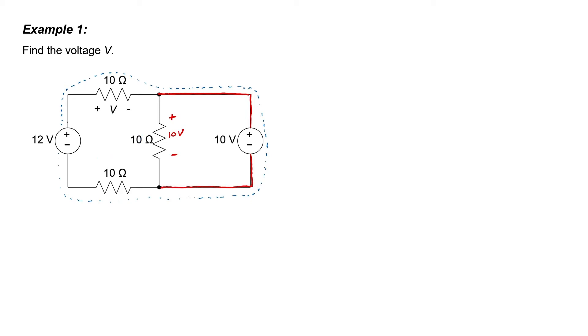Let's start from the bottom of the 12 volt source and work our way clockwise. So I have a 12 volt rise across the 12 volt source. Then I'm going from positive to negative so I have a fall of V. Now I'm going from positive to negative so I have another fall of 10 volts. And then I can define the voltage across this 10 ohm resistor as V2 because I'm not sure what that voltage is yet.